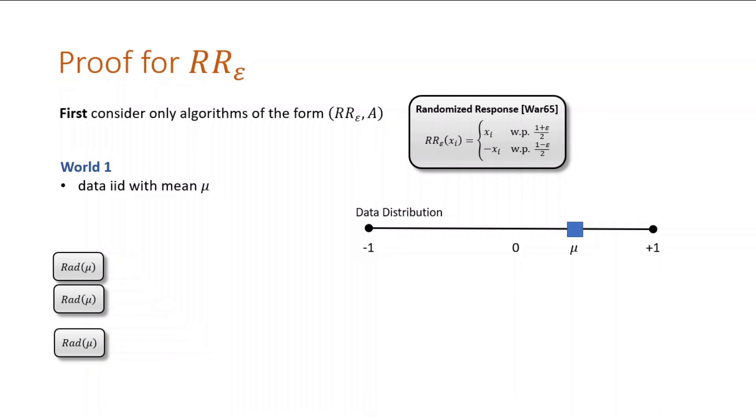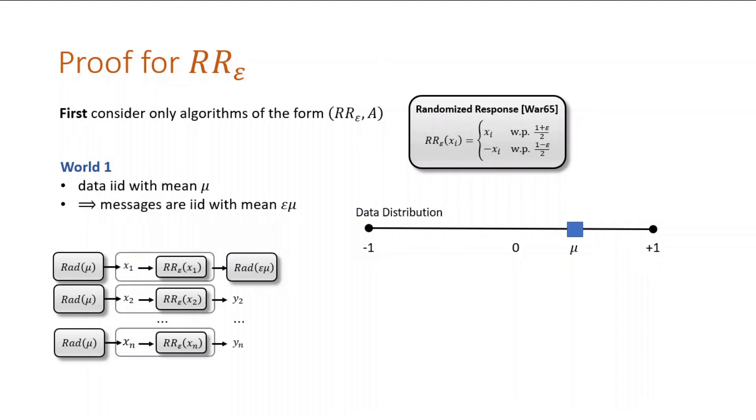Let's consider world one, an honest execution. The data is drawn IID from a distribution of mean mu, and it's not difficult to show that the message from any user is a bit with mean epsilon times mu. Local privacy contracts the mean towards zero. For reasons that will become clear, we will choose mu to be gamma over two epsilon, so that the message distribution has mean gamma over two.